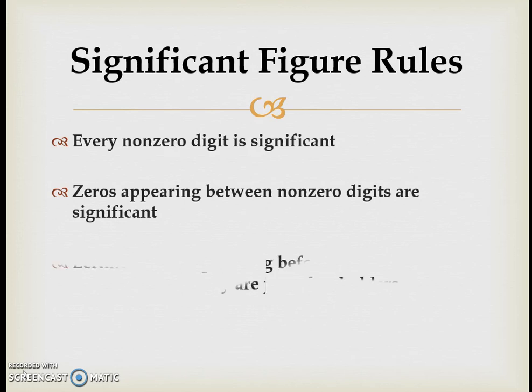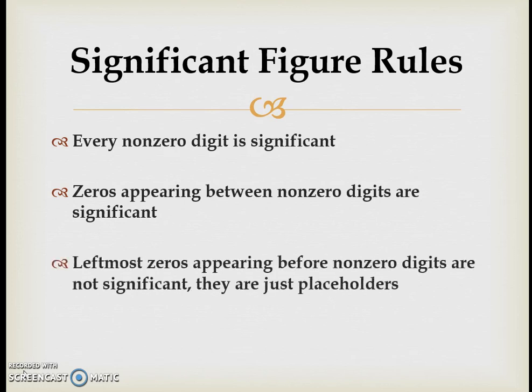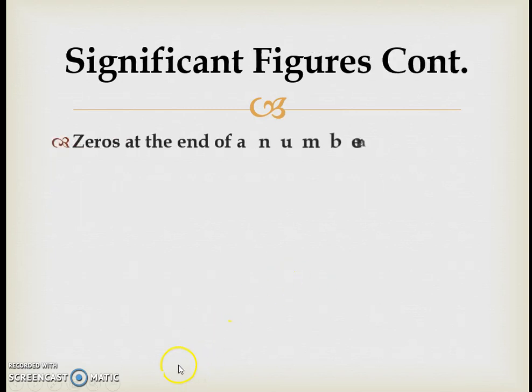In a number like 1001 kilometers, there are four significant digits — the leading one, the two zeros in between, and the trailing one. For really small numbers, when you have a zero, then a decimal, and a bunch more zeros — like the size of an atom — those zeros are just placeholders. That's why in scientific notation it was written as 3 times 10 to the negative 9, not 3.0000000 times 10 to the negative 9.